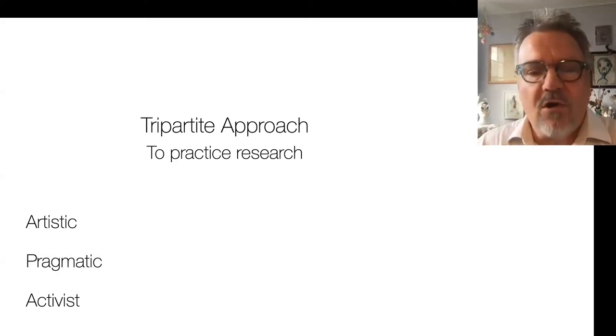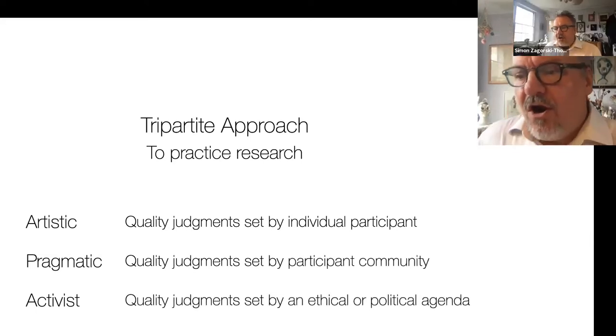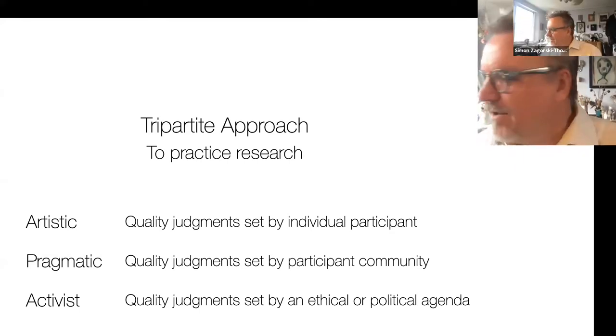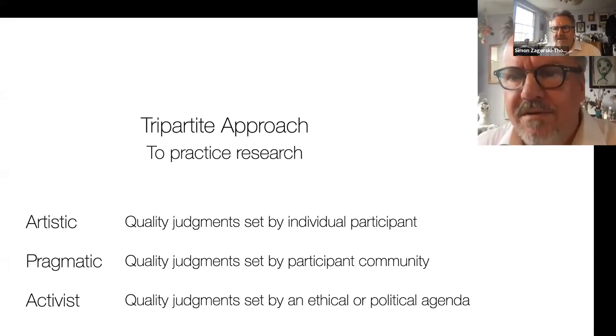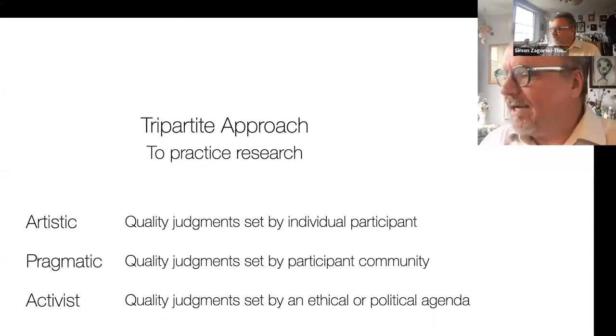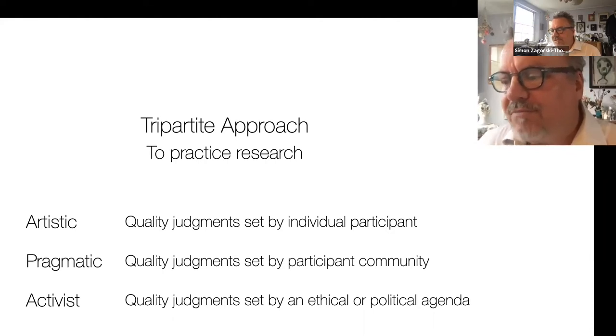In each case, the quality judgments that are used to assess the research element are often seen as maybe less rigorous or less objective than those established within science and social science. One of the key challenges that practice researchers face is not simply to produce the research, but also to establish the criteria by which it can be judged. And to produce rigorous and clear formats through which those criteria can be judged. A fundamental building block of my approach is that the negotiation and development of those criteria for quality judgment are part of the practice research process.